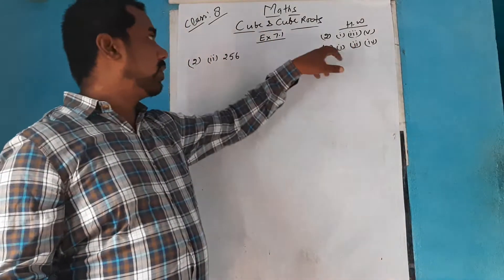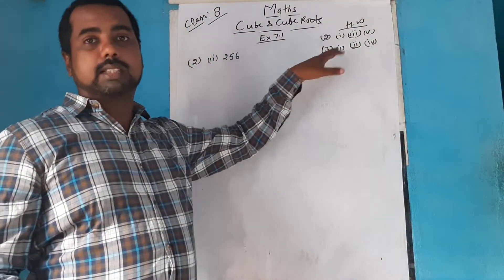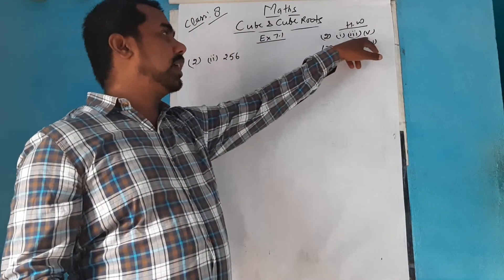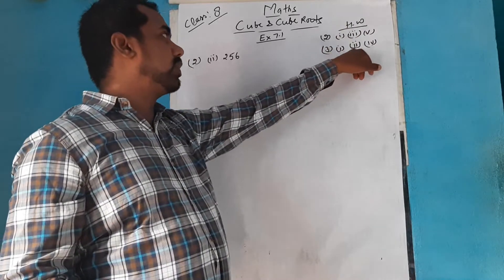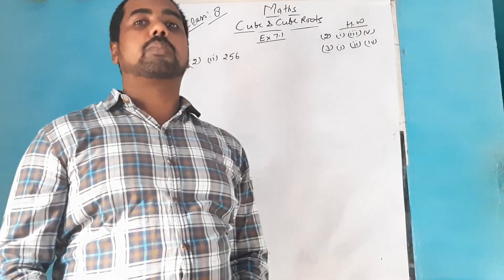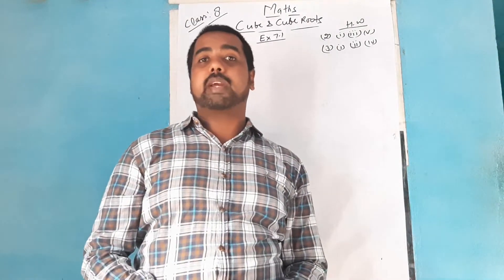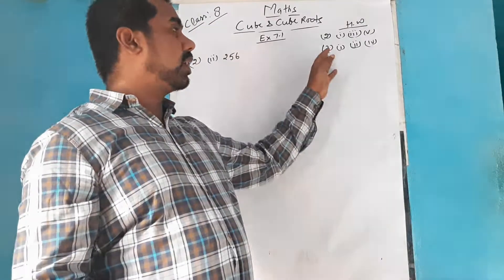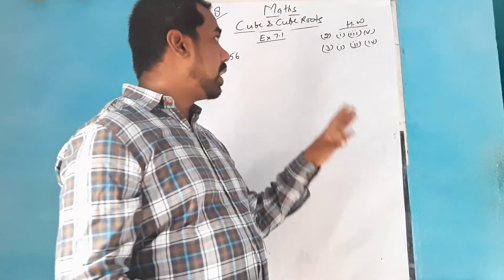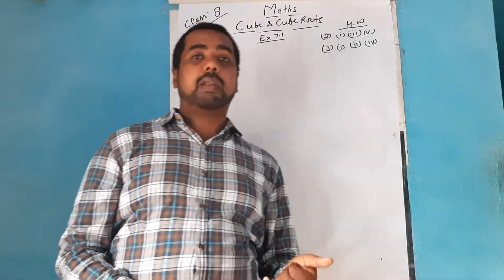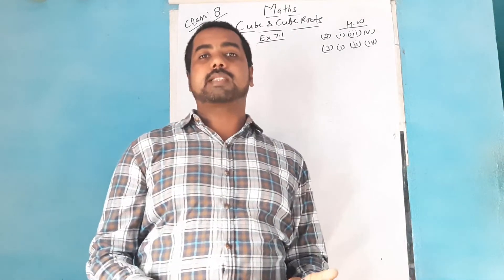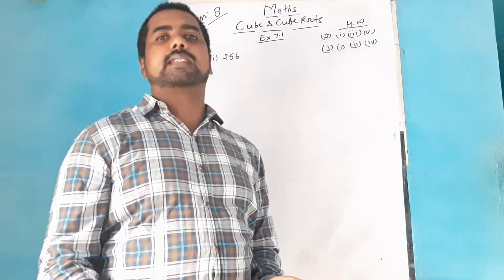Continuing further, for the second, third and fourth questions we are going to work today. In the second question, parts 1, 3 and 5 are homework, and in the third question, parts 1, 2 and 4 are homework. In question 2 we need to find the least number by which a given number should be multiplied to make it a perfect cube. In question 3 we find the least number by which it should be divided to make it a perfect cube. We apply the same concept as in the previous exercise on squares and square roots.